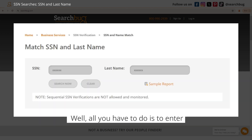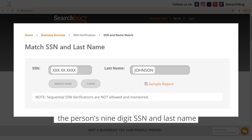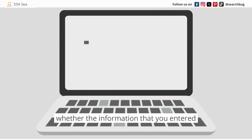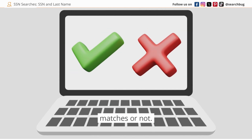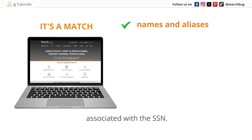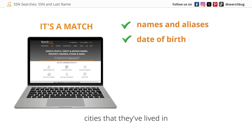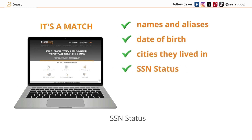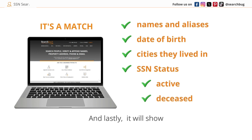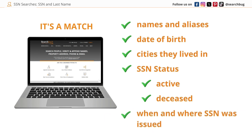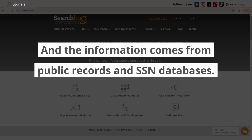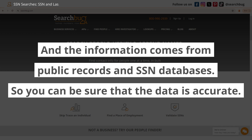All you have to do is enter the person's nine-digit SSN and last name. When you get your report, it will show whether the information you entered matches or not. If it does match, the report will show the names and aliases associated with the SSN, the recorded date of birth, states they've lived in, SSN status — whether it's active or belongs to a deceased person — and when and where the SSN was issued. The information comes from public records and SSN databases, so you can be sure the data is accurate.